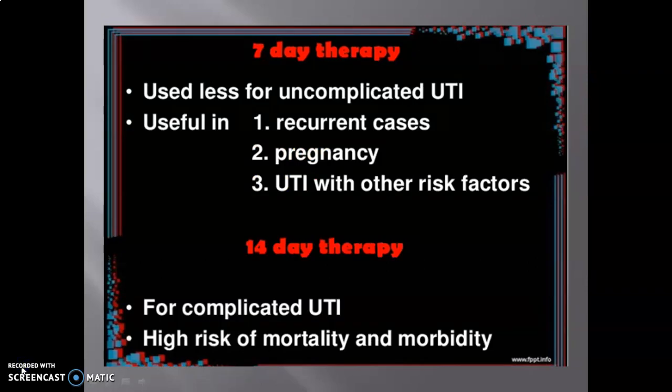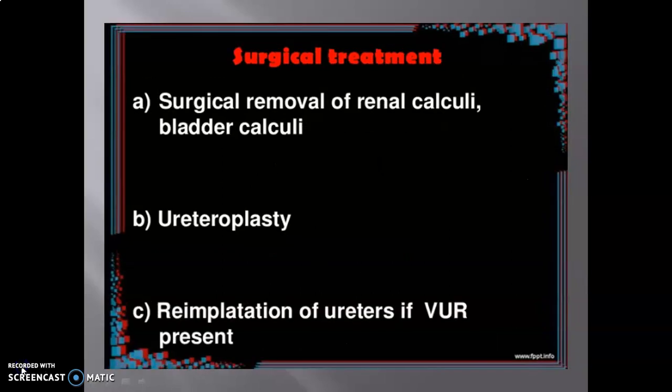Seven-day therapy is used less for uncomplicated UTI but is useful in recurrent cases, pregnancy, and UTI with comorbidities. Fourteen-day therapy is for complicated UTI with high risk of mortality and morbidity. Surgical treatment includes removal of renal calculi and bladder calculi, urethroplasty, and reimplantation of the ureter if vesicoureteral reflux (VUR) is present.